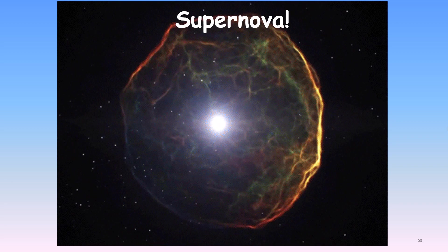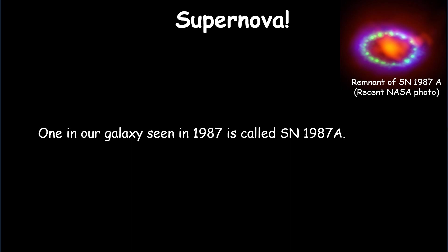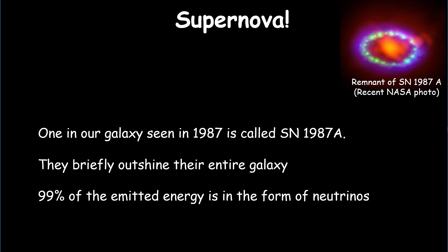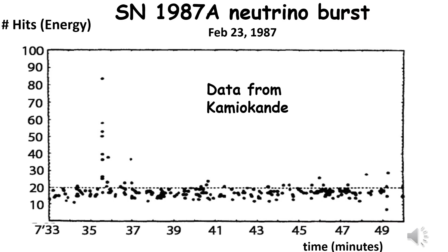Supernovas are the one-time explosions of massive stars at the end of their lives. These explosions are very rare events, occurring only about twice a century in our galaxy, with most of them hidden from view by interstellar dust. One was observed in 1987, but you'd have to go back to before the telescope was invented in 1608 for the previous one seen by naked eye. When they occur, supernovas briefly outshine their entire galaxy with its hundreds of billions of stars. Remarkably, however, 99% of the energy emitted by supernovas is in the form of neutrinos rather than light. In addition, the neutrino emissions are largely confined to a very brief burst lasting a matter of seconds.